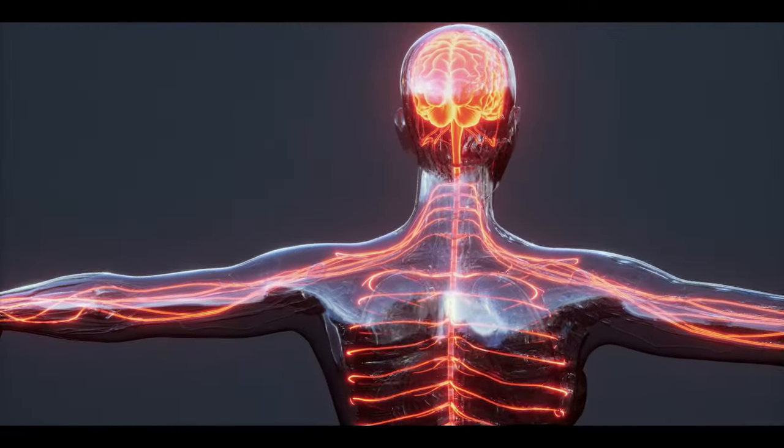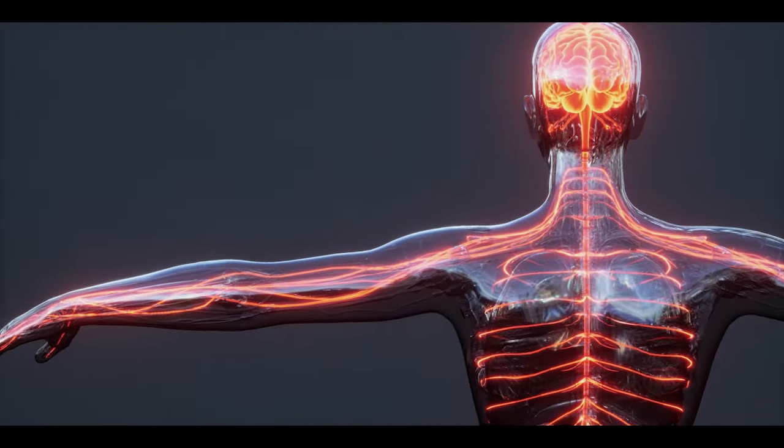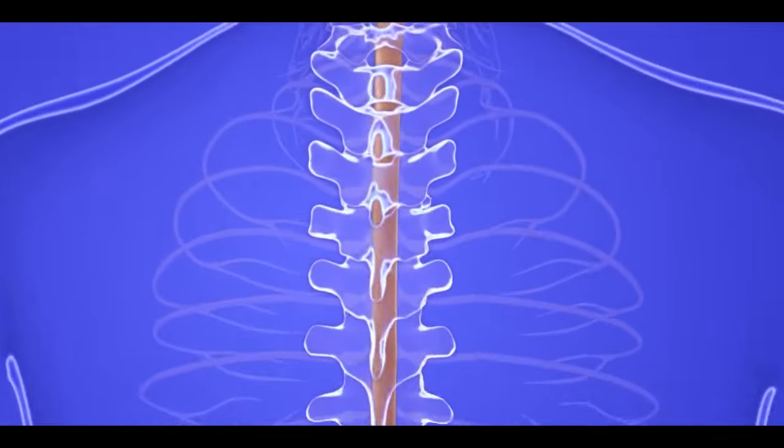The spinal cord consists of thousands of nerves that make it a very sensitive and delicate organ. That's why the spinal cord is packed within a bony structure called the vertebral column.